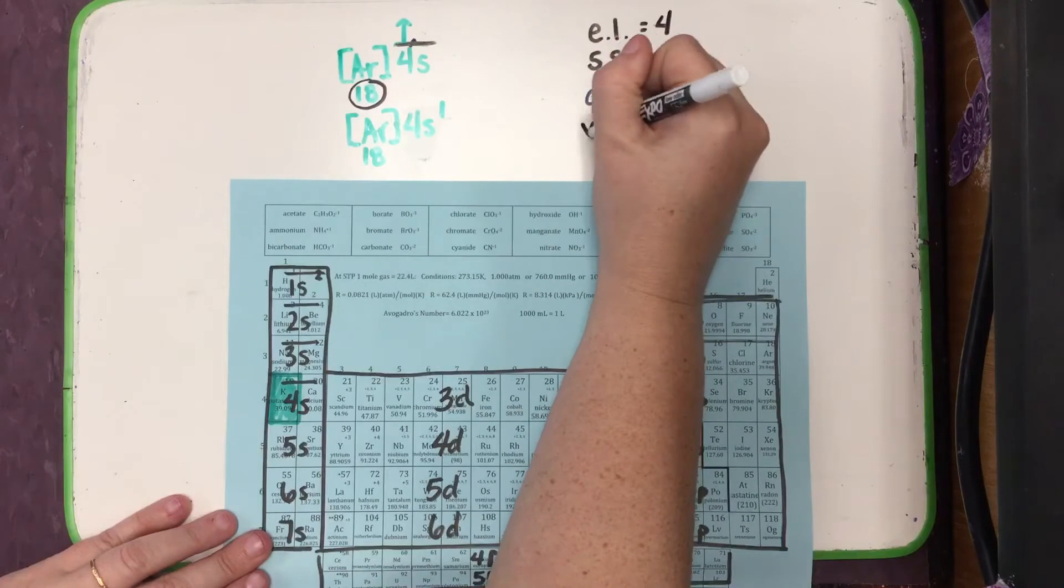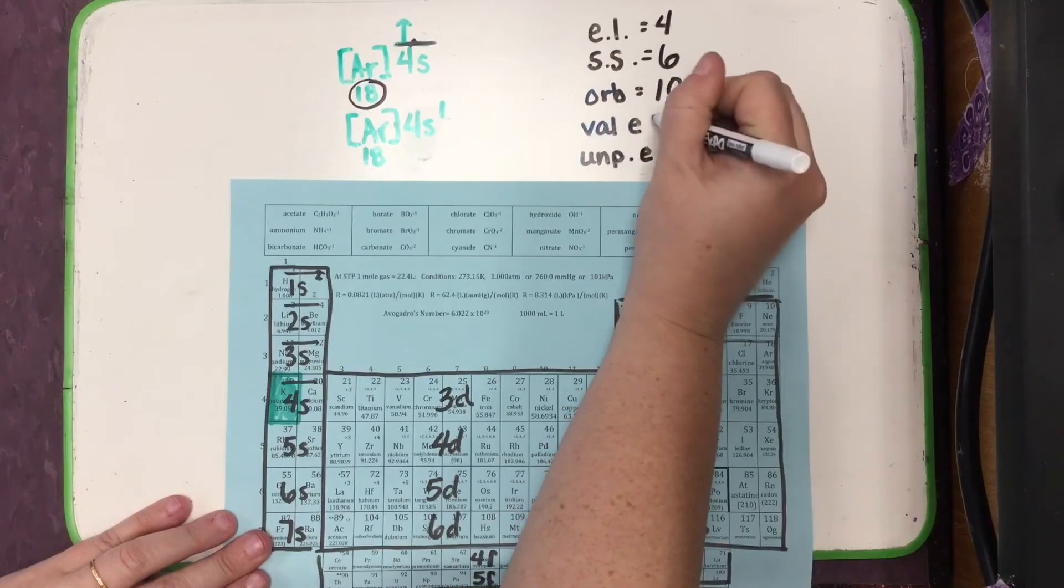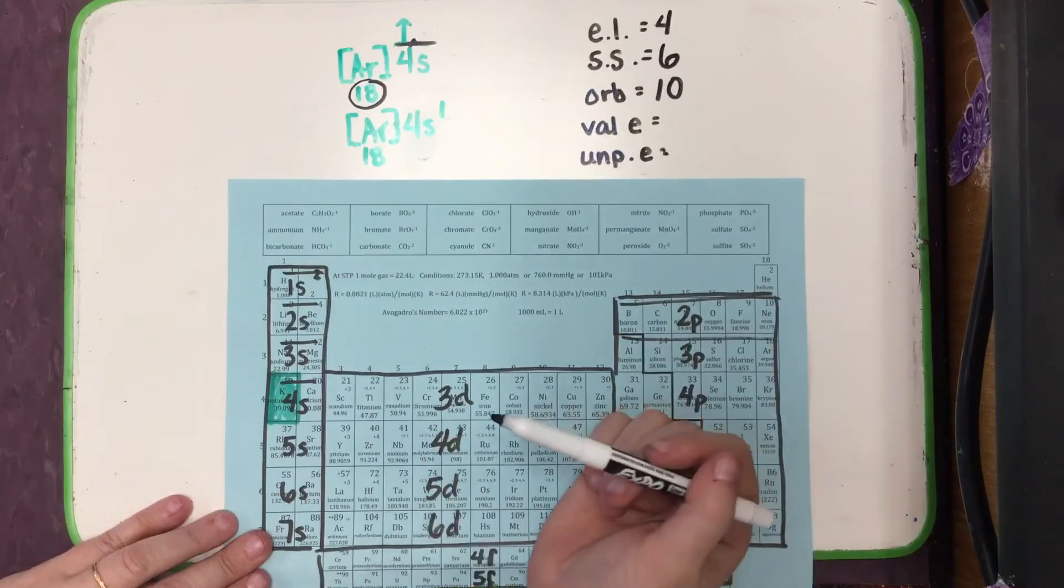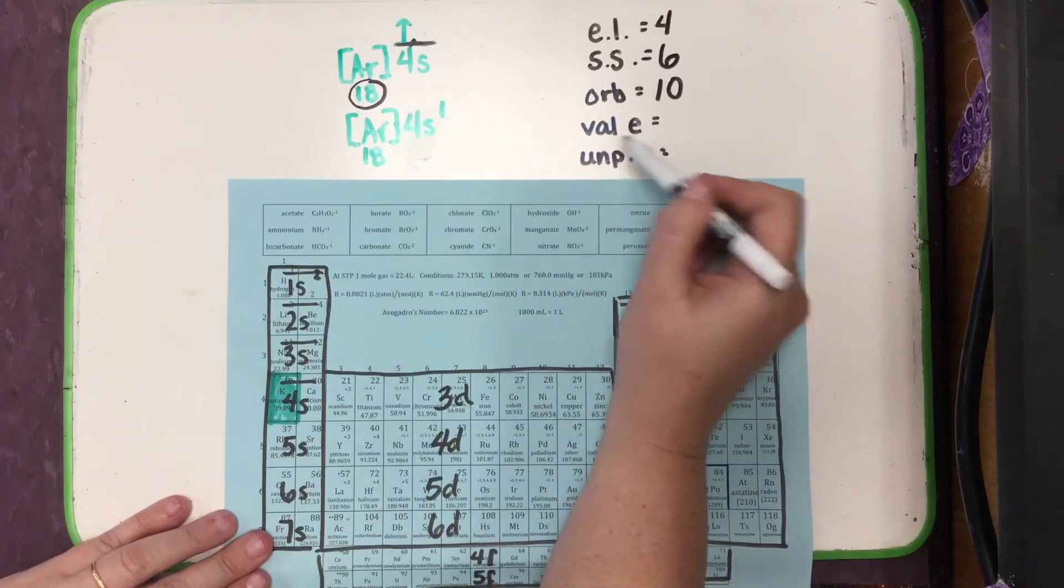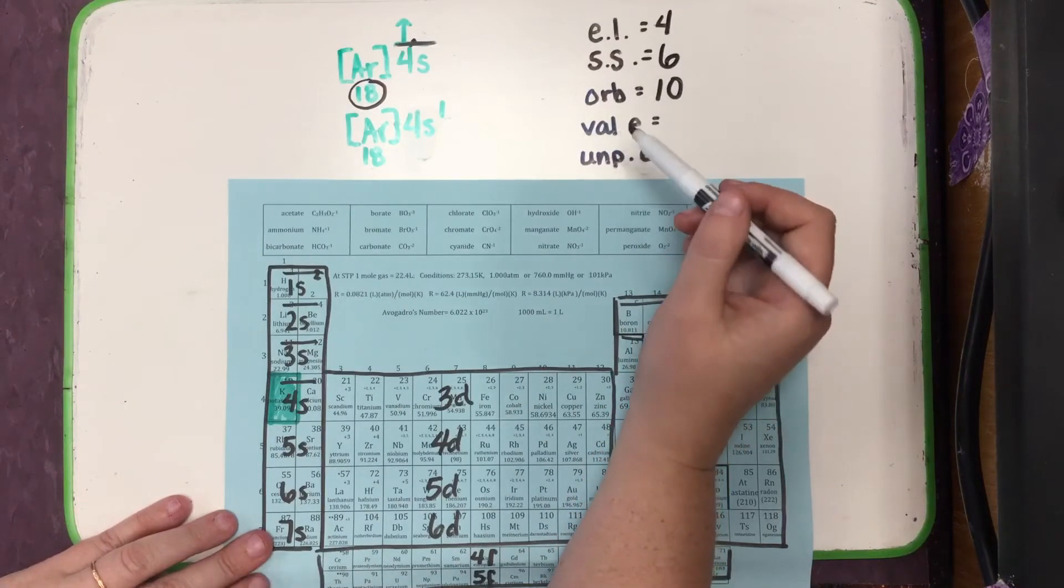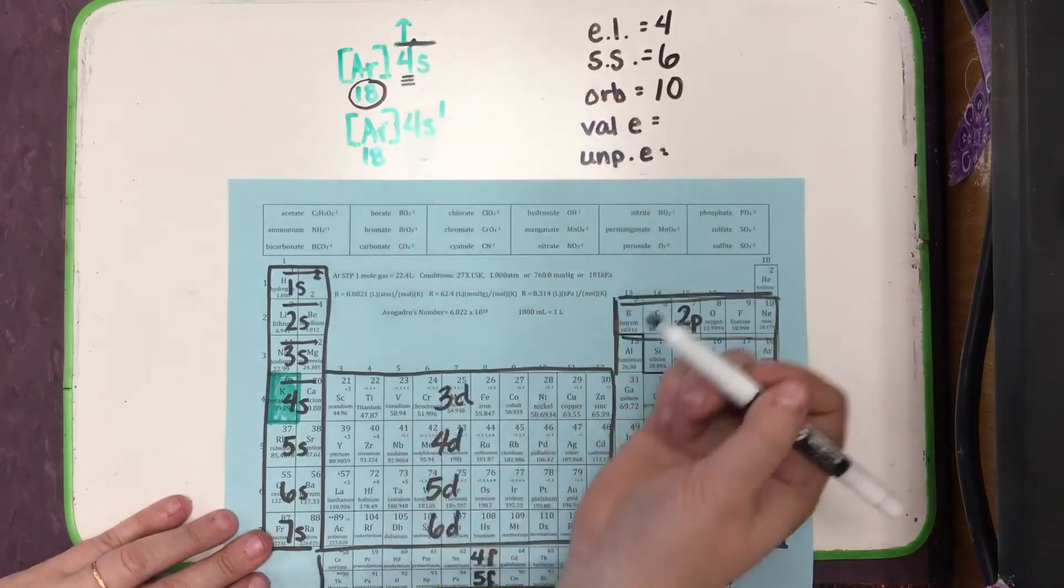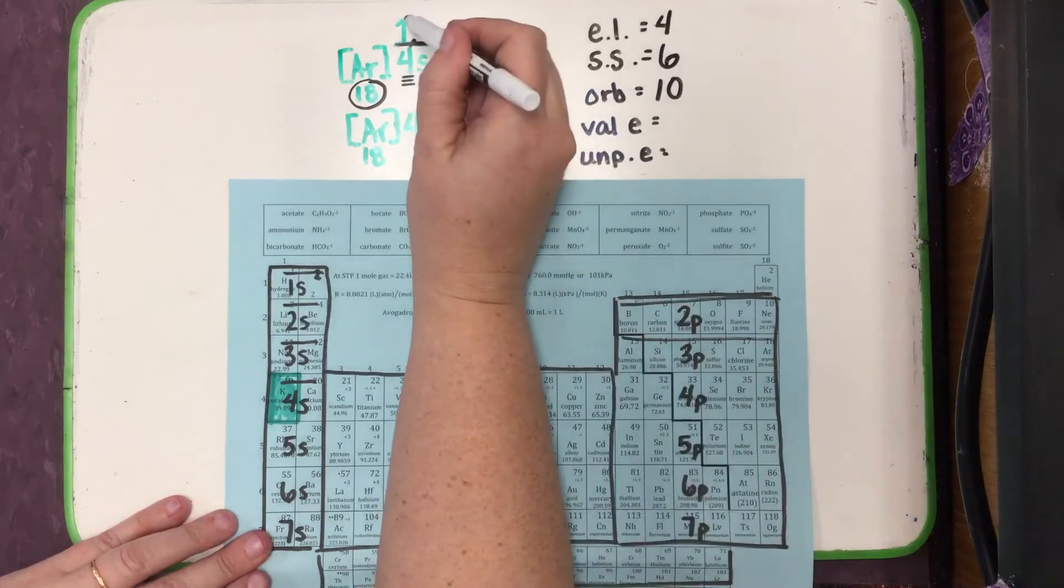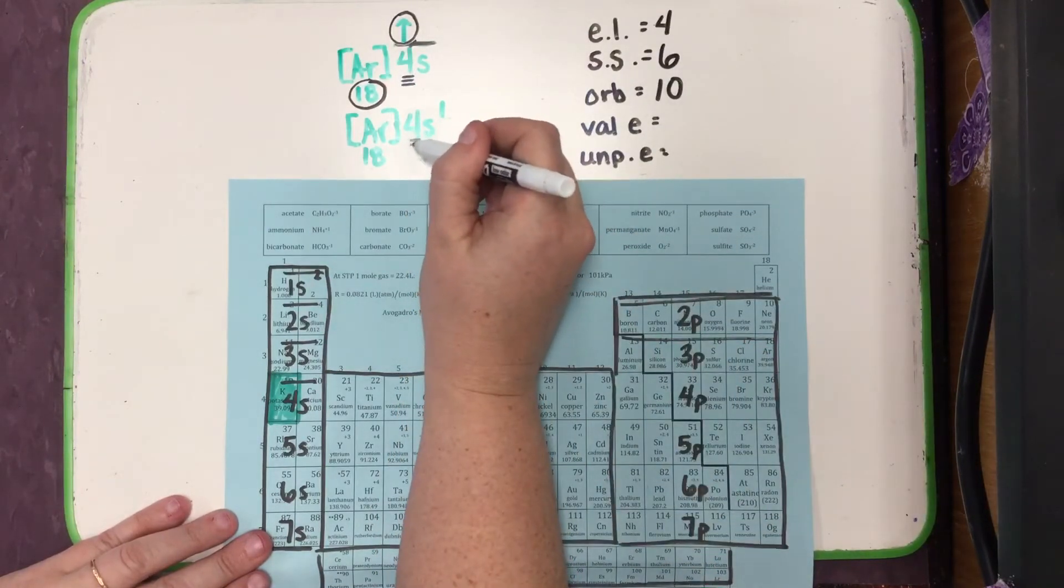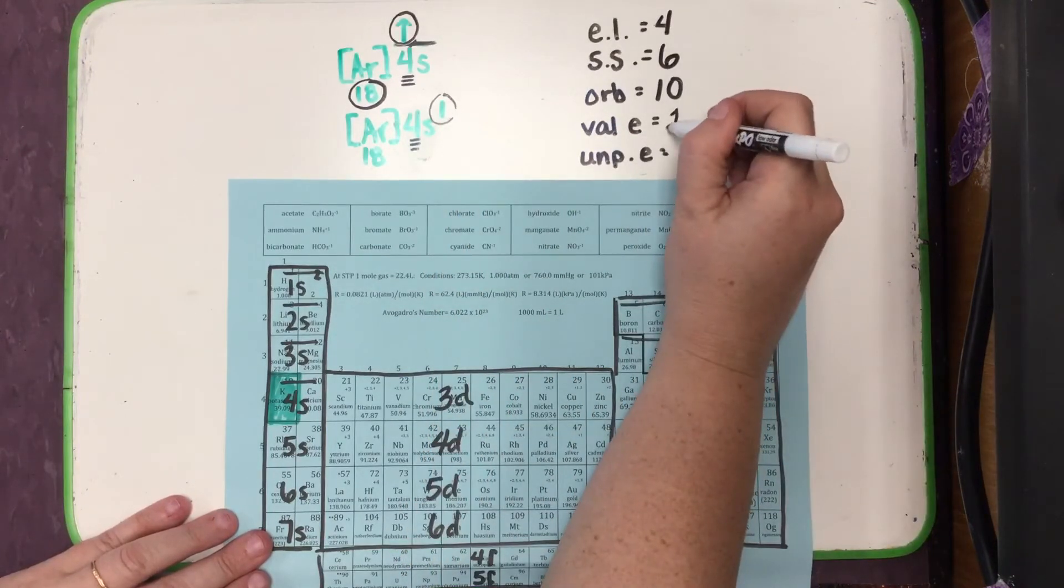The things we're going to add in today are valence electrons and unpaired electrons. To count valence electrons, you really could look at either one of these representations. Because a valence electron is an electron that's in the outermost energy level, not necessarily subshell, but energy level. So we need to consider the principal quantum number, which here, our biggest principal quantum number is 4. And then we just consider any electron that is above that region. Here and here, we see that in the fourth energy level we have one electron. So that's one valence electron.